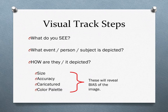And then the next step — probably the most important part — is: how are these images being depicted? How they are depicted, in terms of size, accuracy, caricature, or color palette, will reveal the bias of the image. If we want to make somebody seem powerful, we may draw them very big. If we want to make somebody look silly, we might not be very accurate with what they look like.